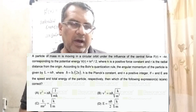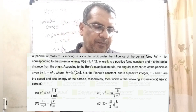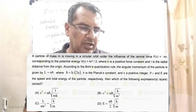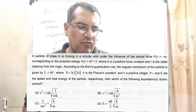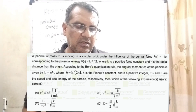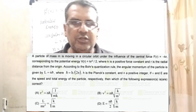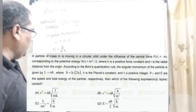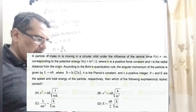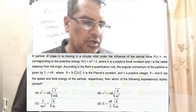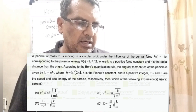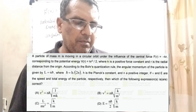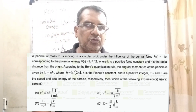Where h-bar = h by 2π, h is Planck's constant and n is a positive integer. If v and E are the speed and total energy of the particle respectively, then which of the following expressions is correct? It is a multiple choice question with four options: Option A: r² = nh√(1/mk); Option B: v² = nh√(k/m³); Option C: L/mr² = √(k/m); Option D: E = (nh/2)√(k/m). This question is from JEE Advanced 2024.